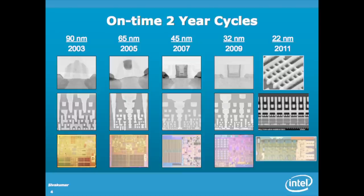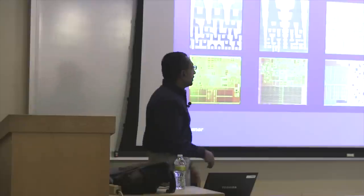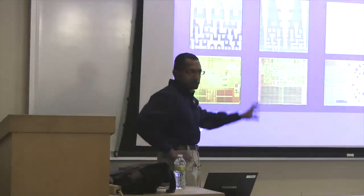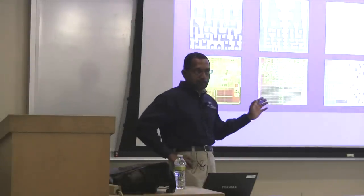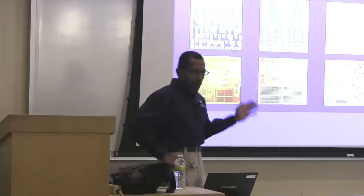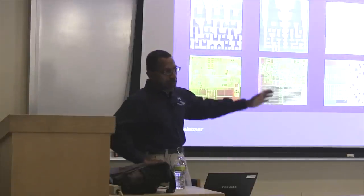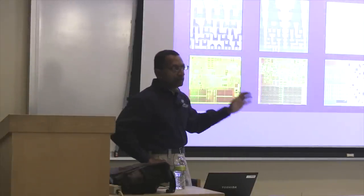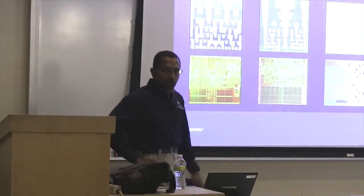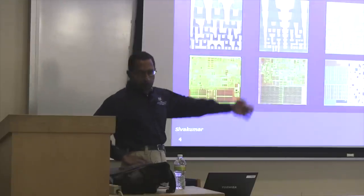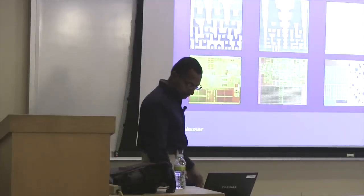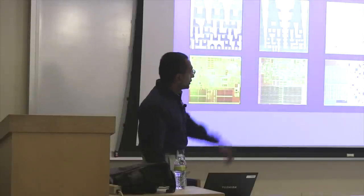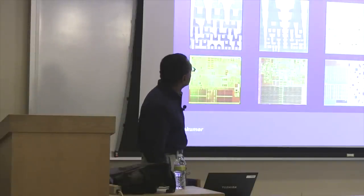Every one of these generations had some new innovation either in the transistor or in the way you wired the transistors. The feature sizes get smaller every generation, so 22 nanometer represents the state of the art in the marketplace today. We're working on 14 nanometers, which is the next node, and there is already some research work going on in the 10 nanometer node beyond that — work that will probably come out in the next two to four years.